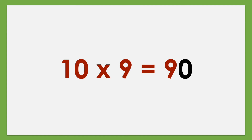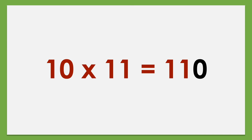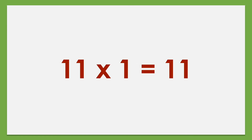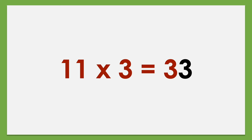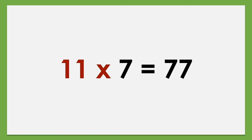10 times 9 equals 90, 10 times 10 equals 100, 10 times 11 equals 110, 10 times 12 equals 120. Set of 11: 11 times 1 equals 11, 11 times 2 equals 22, 11 times 3 equals 33, 11 times 4 equals 44, 11 times 5 equals 55, 11 times 6 equals 66, 11 times 7 equals 77.